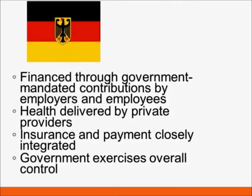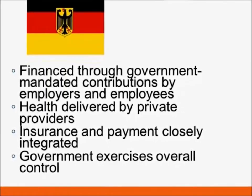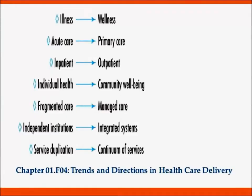In Germany, insurance and payments are closely integrated and the government exercises overall control. As you work on your project comparing the U.S. to foreign countries, consider these models and current trends. The Affordable Care Act represents both opportunities and challenges. We are shifting from a focus on illness to wellness, from acute care to primary care — where the primary physician serves as the gatekeeper to control costs — moving toward more outpatient care and a focus on the community as a whole rather than the individual, and away from fragmented care toward more managed, integrated care.